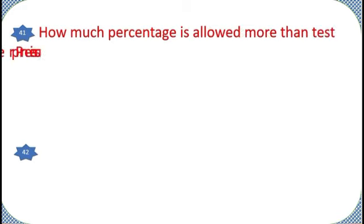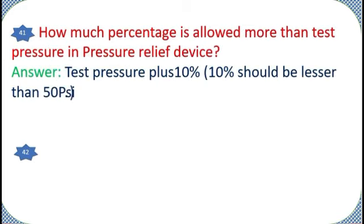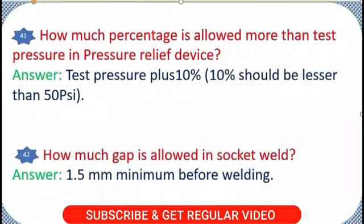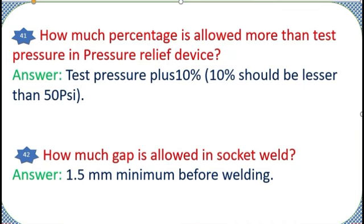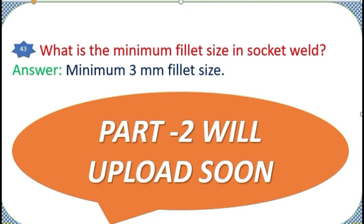How much percentage is allowed more than test pressure in pressure relief device? Answer: Test pressure plus 10 percent. 10 percent should be lesser than 50 psi. How much gap is allowed in socket weld? Answer: 1.5 millimeters minimum before welding. What is the minimum fillet size in socket weld? Answer: Minimum 3 millimeters fillet size.